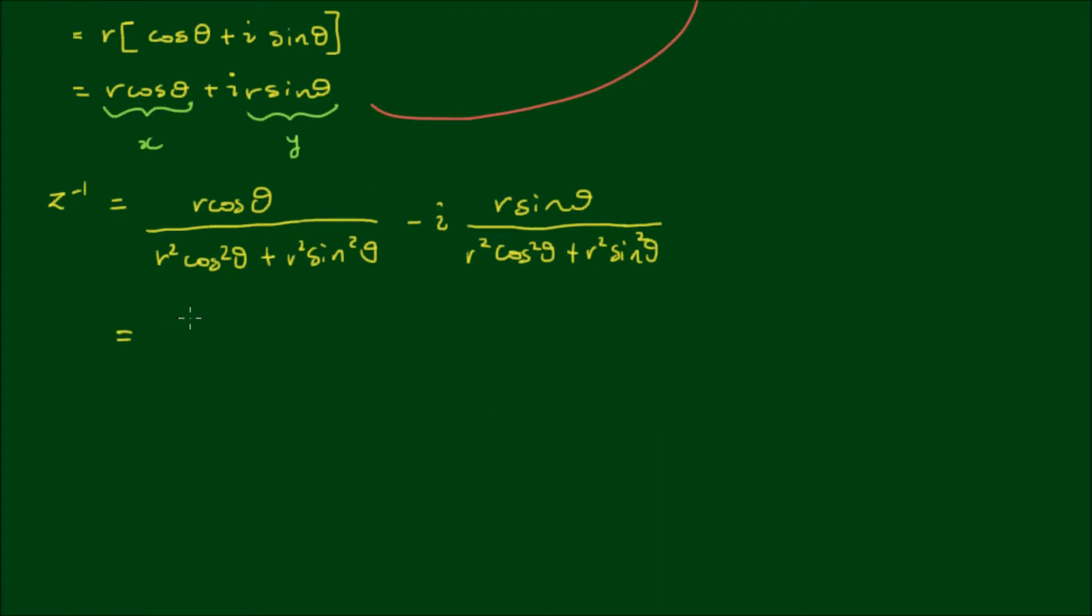And if we extract some common factors, so the common factor on the top is r, we'll get (cos θ minus i sin θ) on the top. And a common factor on the bottom is r squared times (cos squared θ plus sin squared θ).